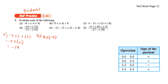8 plus negative 4 times 8. There are two operations — addition and multiplication — and according to BODMAS, multiplication comes first. So negative 4 times 8: positive and negative gives negative 32. Then 8 plus negative 32, which is 8 minus 32, giving negative 24.